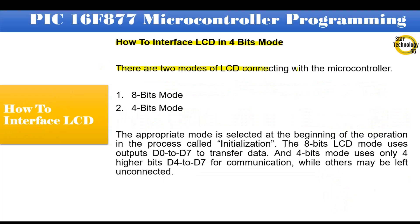There are two modes of LCD connecting with a microcontroller. First, 8-bit mode. Second, 4-bit mode. The appropriate mode is selected at the beginning of the operation in the process called initialization. The 8-bit LCD mode uses outputs D0 to D7 to transfer data, and 4-bit mode uses only the 4 higher bits D4 to D7 for communication, while others may be left unconnected.